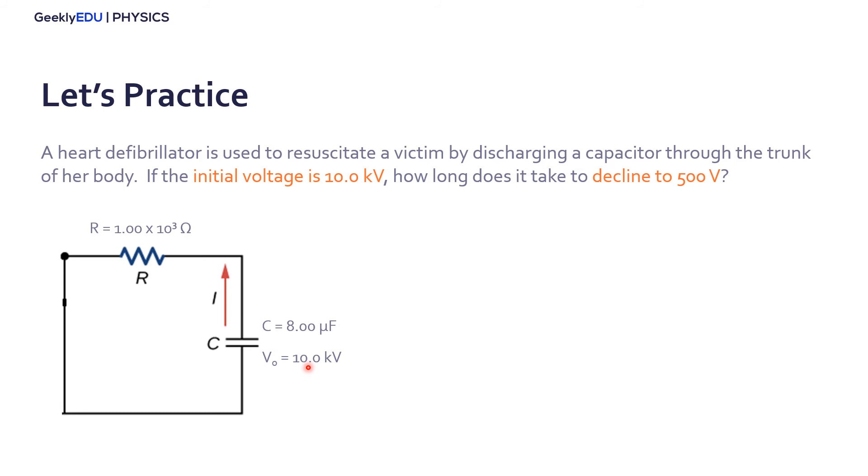To know how long it takes, first, let's calculate the time constant, which is R times the capacitance. So we have a time constant of 8 milliseconds. It means that at 8 milliseconds, the voltage of our capacitor will be 0.368 times the initial voltage, because we are discharging the capacitor. So after 8 milliseconds, the voltage on our capacitor will be 3680 volts.